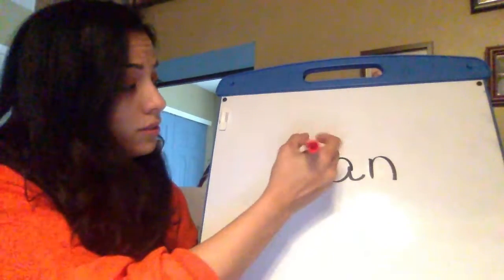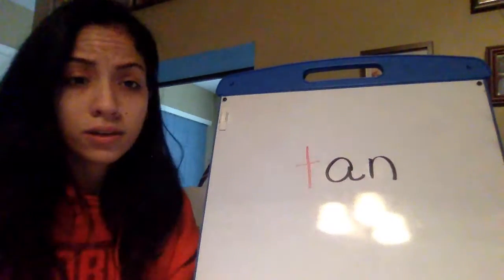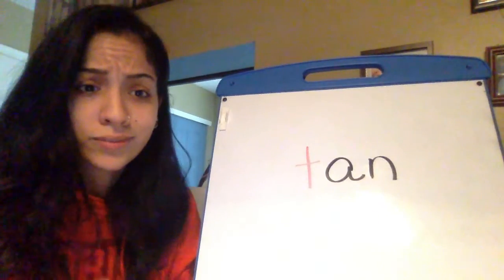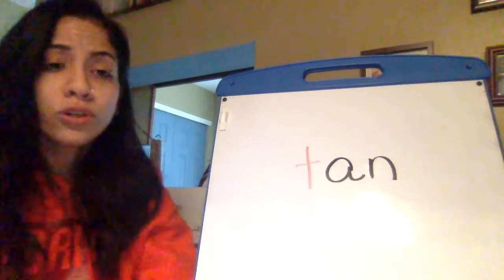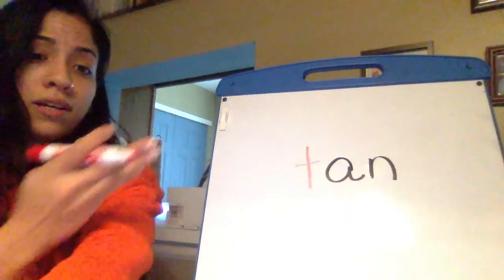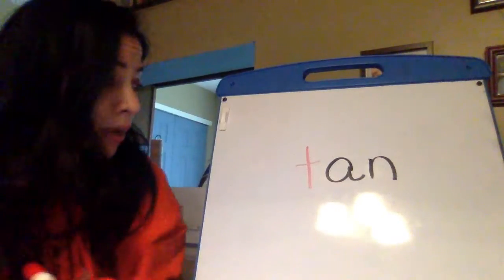So let's try this one. T, t, right? That's a T. T, t, turtle. So you go like this. T, an, n, blend it, tan. Okay.